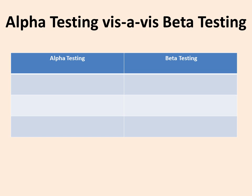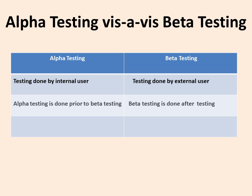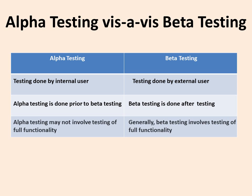Alpha and beta testing: alpha is done by internal users, beta is done by external users. Alpha is done first and beta follows. Alpha may not involve full functionality testing, whereas beta generally involves testing of full functionality.